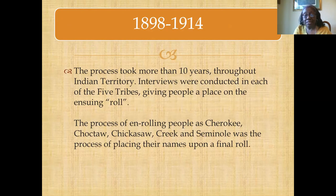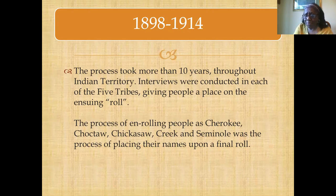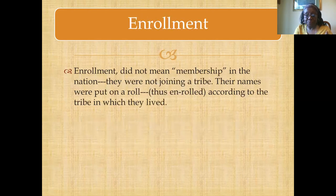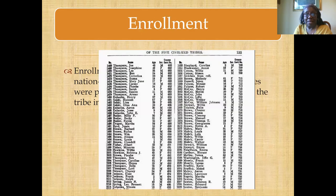Interviews were conducted throughout the territory, giving people a place on the ensuing roll. This process of enrolling — meaning not joining or making people members of something, but placing their names upon this list, upon this roll of Cherokee, Choctaw, Chickasaw, Creek, and Seminole nations — did not mean membership. It meant simply making them eligible. There are many pages to that volume, more than 600 pages, that became the final roll in all types of categories.